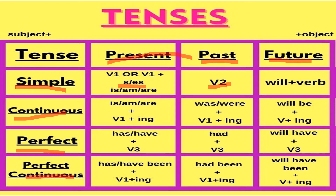In future tense, the root form of the verb is used with 'will.' With I and we, we use 'shall,' and with he, she, it, we use 'will.'